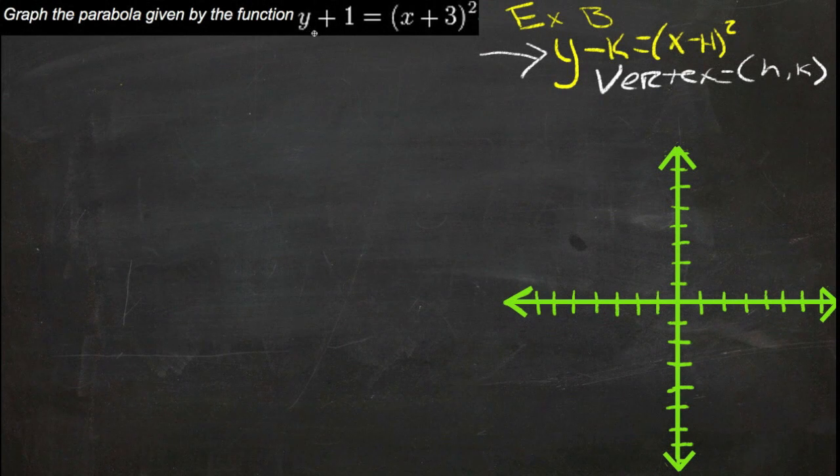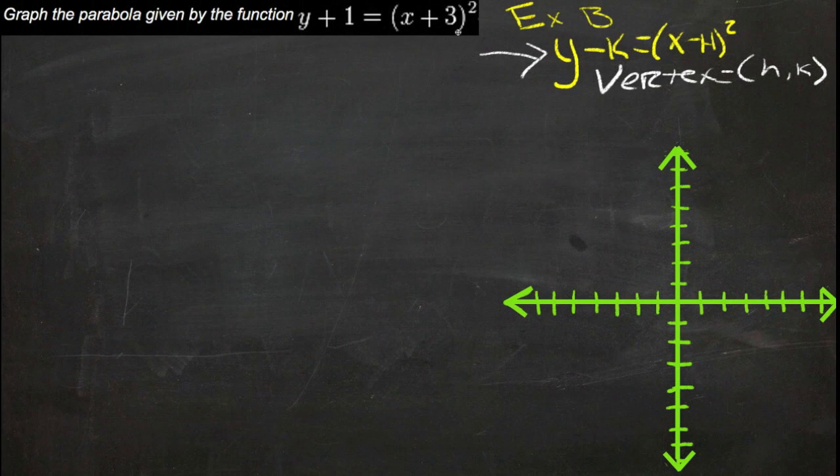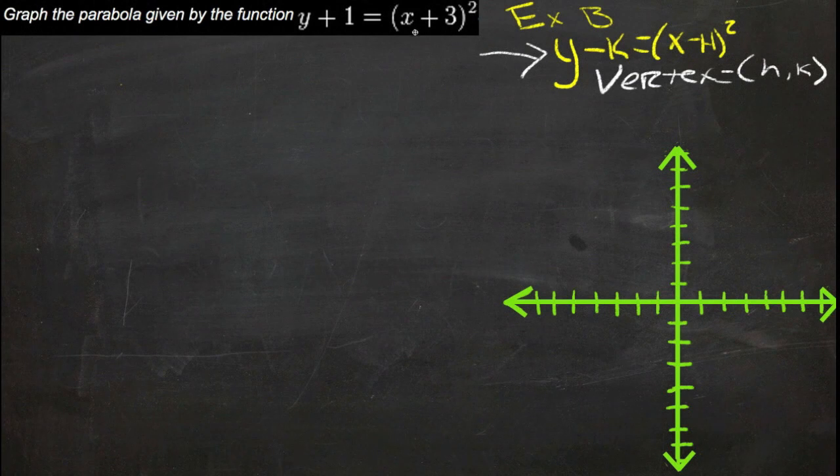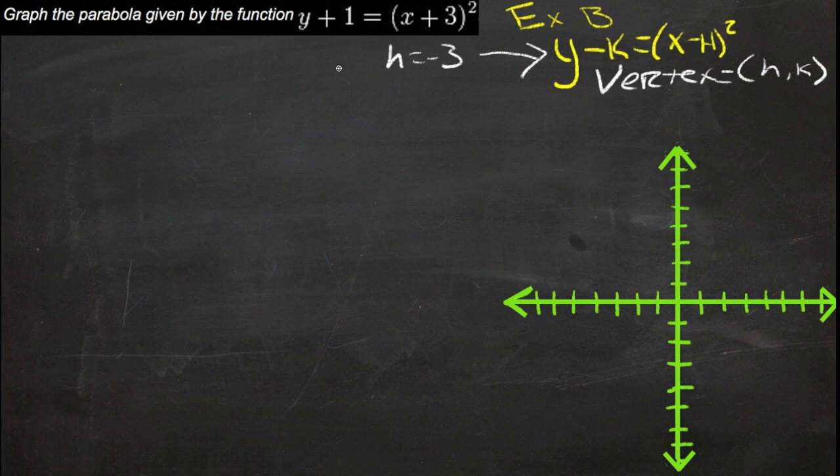So if we look at our example, y plus 1 equals x plus 3 squared, our h then, if it's something that's subtracted from x, it must be a negative 3, so it would come out positive. So our h is negative 3, and our k is negative 1.